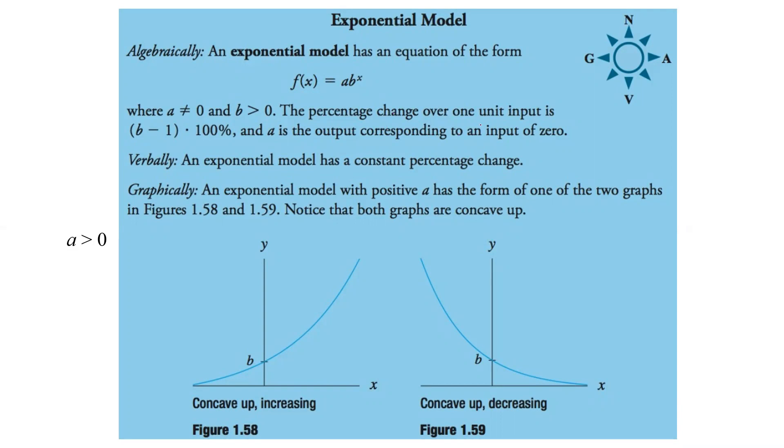And the percentage change over one unit input is b minus 1 times 100%. So that percent change over one unit of input is just taking whatever our b value is, minus 1 times 100%. And a is the output corresponding to input of 0. So if we put in 0 for x, b to the 0 is 1, times a is a.